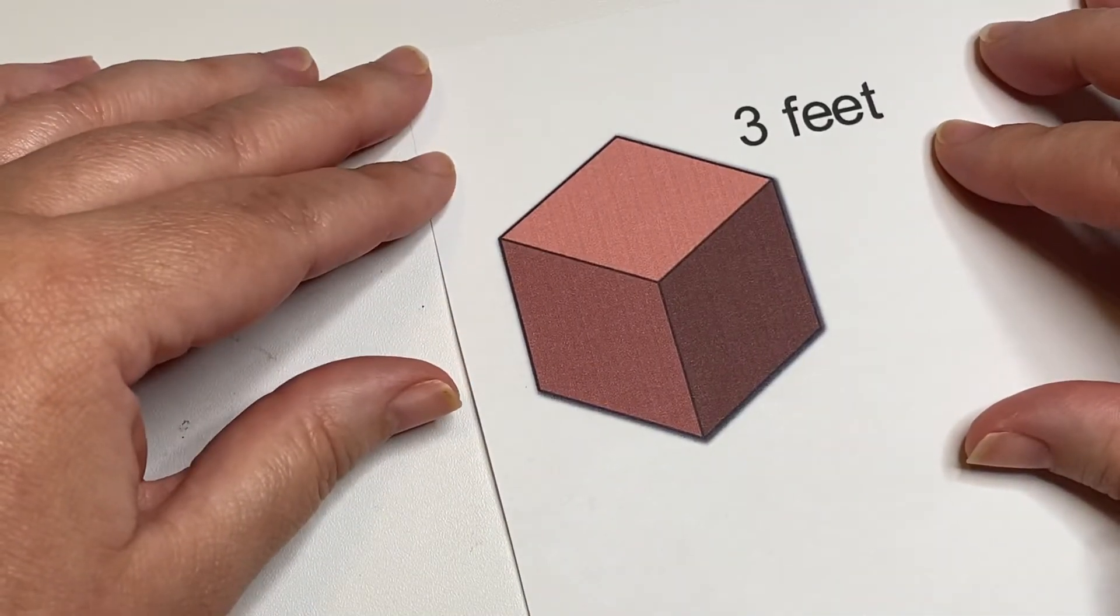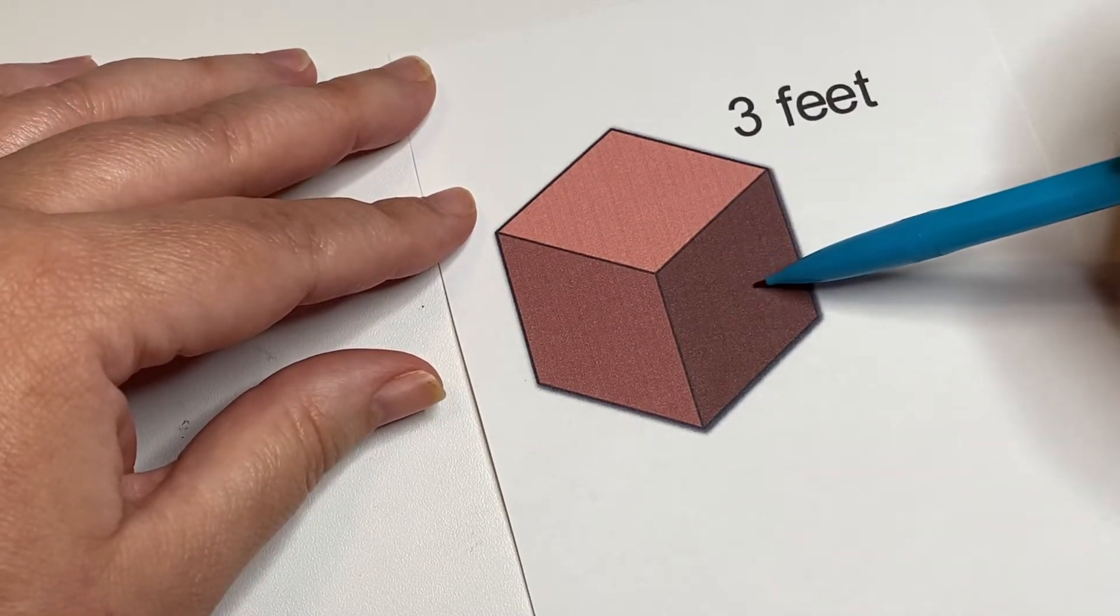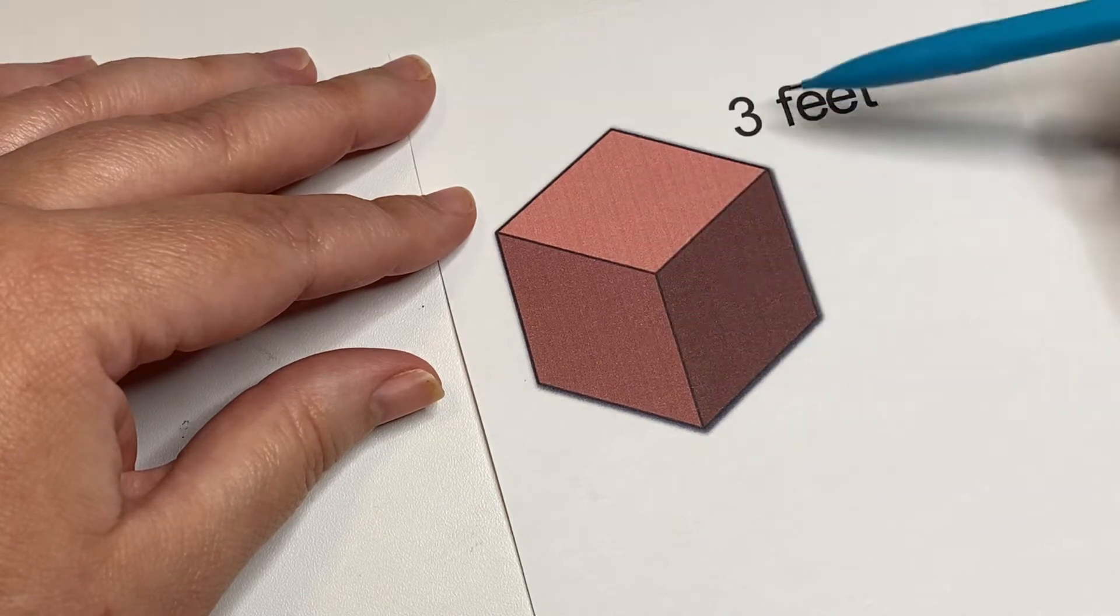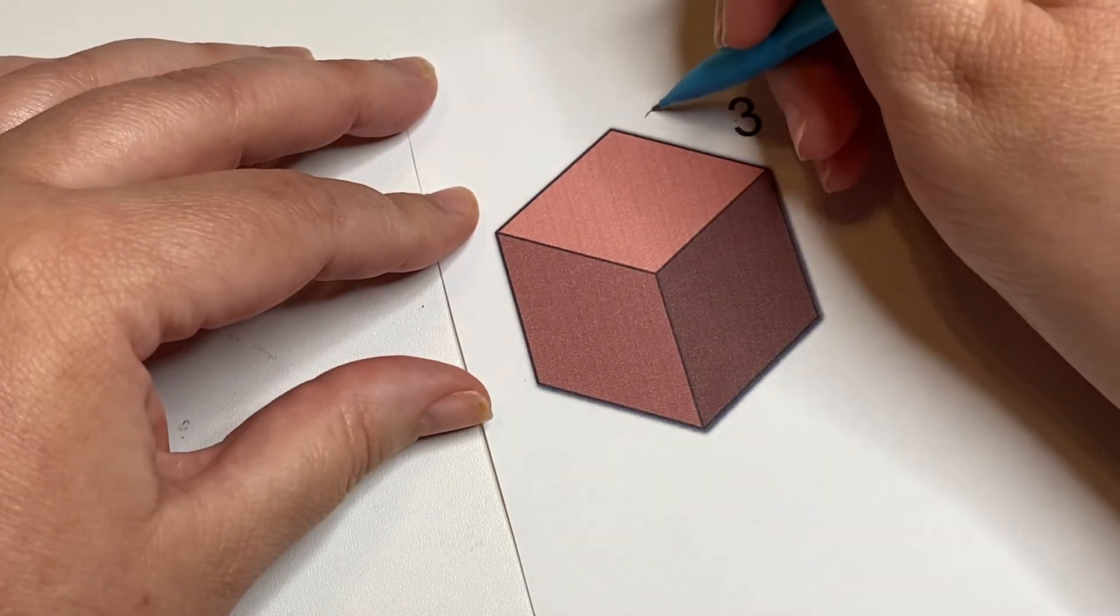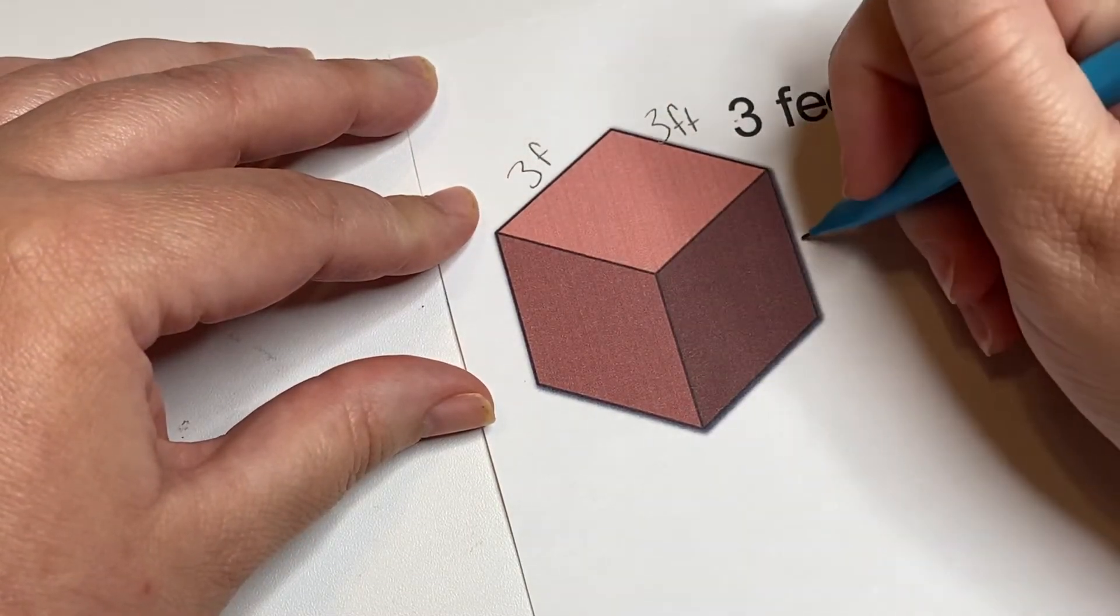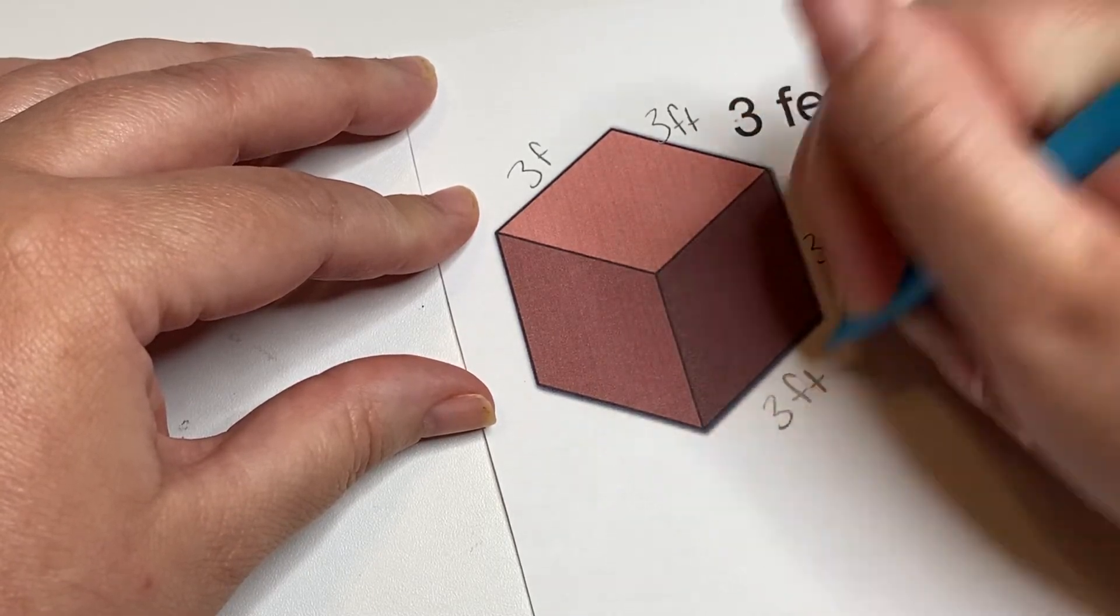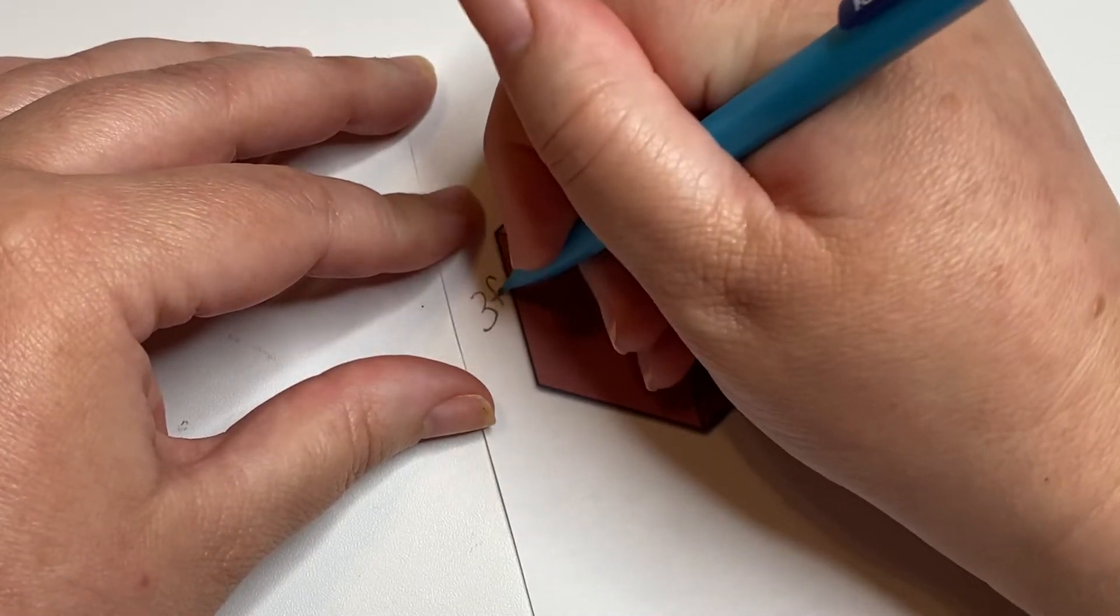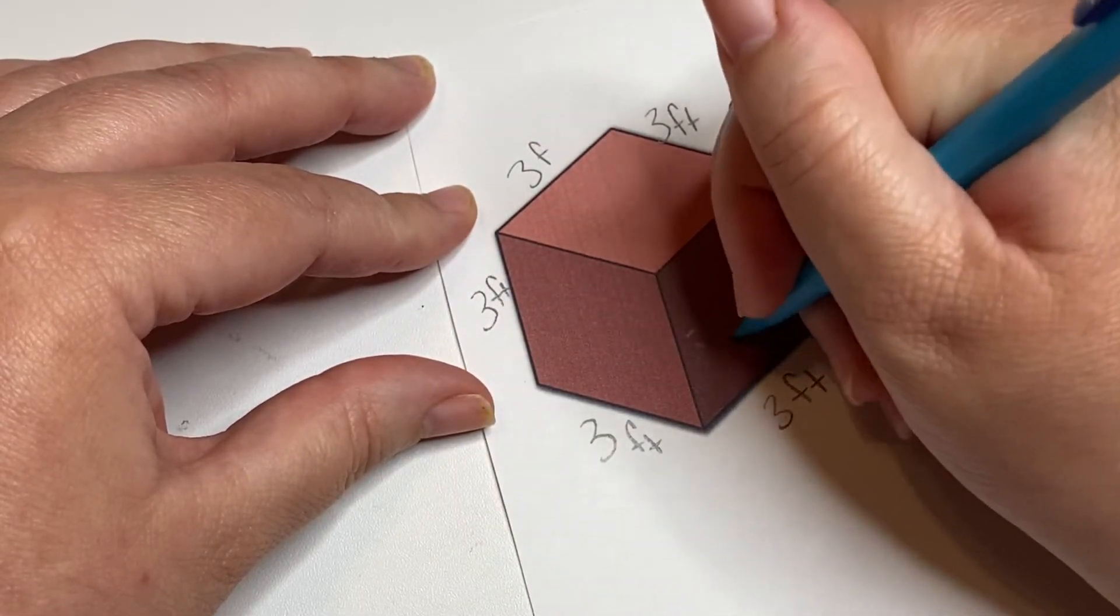Okay, so let's talk about how do I find the surface area of a cube when I'm given this and it says that's three feet. So that means this is three feet, this is three feet—basically all of these edges are three feet. Now you don't have to write all of them, but I'm just showing you that they are all the same.